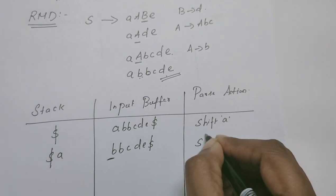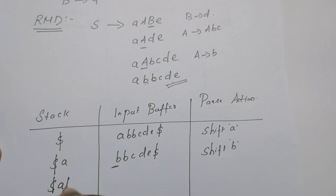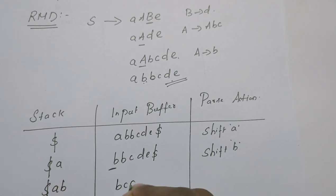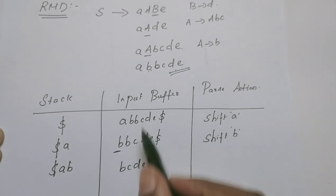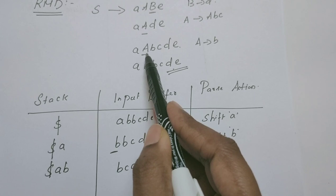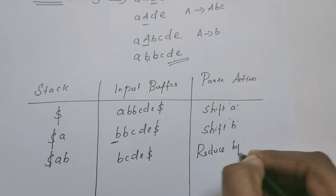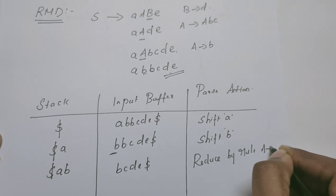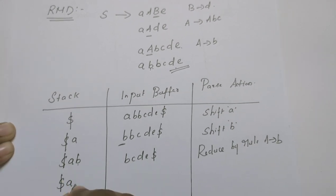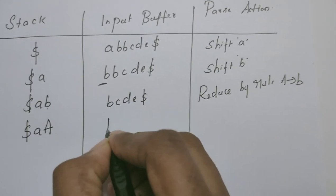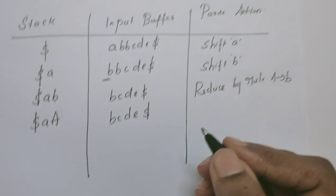Next, we have to shift B also. Stack contains dollar, A, B at the top. Input buffer contains B, C, D, E, dollar. Now this B is to be reduced to A. Reduce by the rule A derives B. Stack now contains dollar, A — this B is reduced to A. Remaining string is B, C, D, dollar.